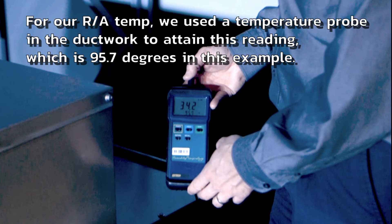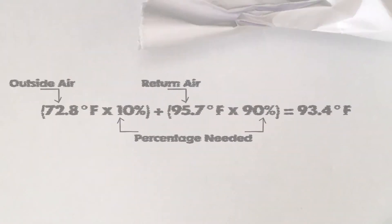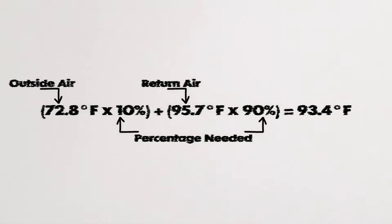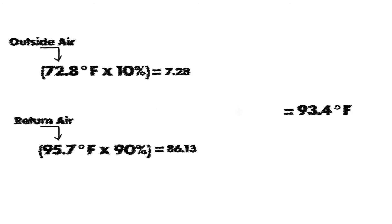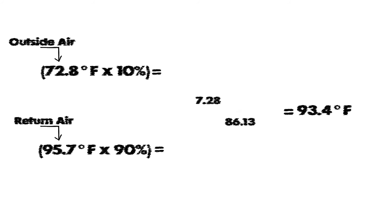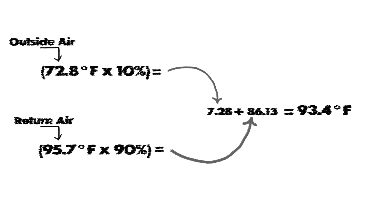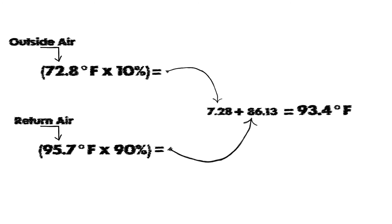Using our readings we will apply the mixed air temperature formula to determine our target temperature. We take the outside air temperature times the percent required, plus the return air temperature times its percent. So 72.8°F × 10% plus 95.7°F × 90% gives us 7.28 + 86.13, and the mixed air temperature should be 93.4 degrees.